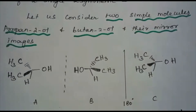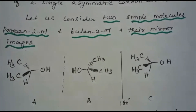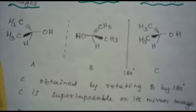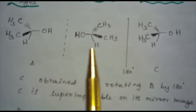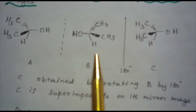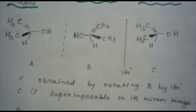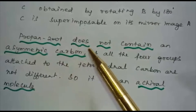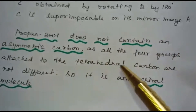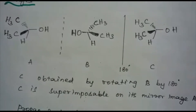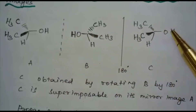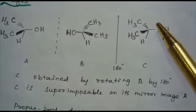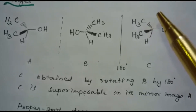Let us consider two simple molecules: propane-2-ol and butane-2-ol, and their mirror images. For propane-2-ol, structure C is obtained by rotating structure B by 180 degrees, and C is superimposable on its mirror image. Propane-2-ol does not contain an asymmetric carbon because all four groups attached to the tetrahedral carbon are not different — two of them are CH₃. Therefore, it is an achiral molecule.